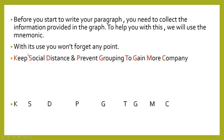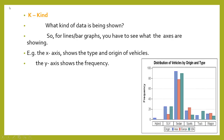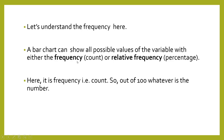With the use of the mnemonic, you won't forget what points are to be included. The mnemonic is: 'Keep Social Distance And Prevent Grouping To Gain More Company.' The first letter of every word stands for a question. K stands for Kind — what kind of data is being shown. The x-axis shows type and origin of vehicles and the y-axis shows frequency, which here means count — the number out of 100.